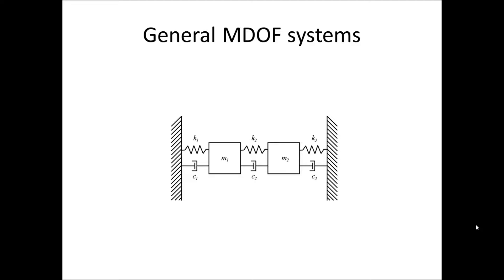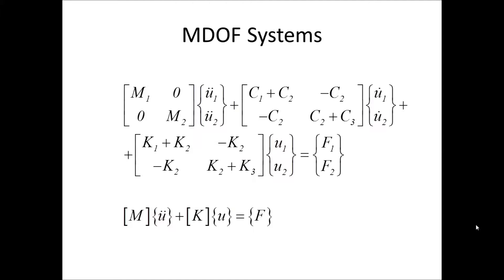Then we come to the general multi-degree freedom systems. This is when we have more than one mass, and for example, two masses is the smallest MDOF system you can have.